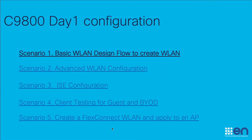It's going to be a series of recordings for different feature configurations on a Catalyst controller. We're going to have in this series a total of five scenarios, and possibly add some additional ones in the future. We're going to start now with scenario one, which is a basic WLAN design — how to create a WLAN, its basic security parameters, and how to connect the client to the WLAN. It's just a very simple and fast configuration.